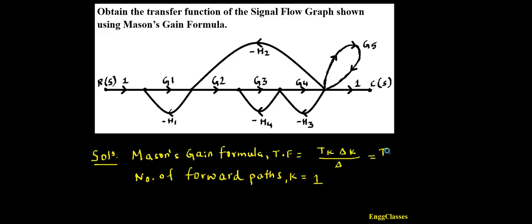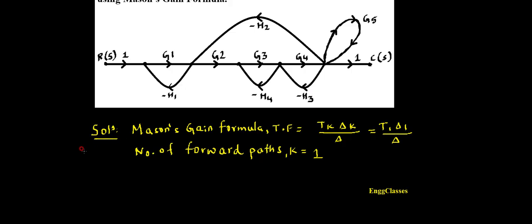Since there is only one forward path, I can expand the formula as T1·Δ1 divided by Δ. Now, what is that forward path? T1 is equal to 1 × G1 × G2 × G3 × G4 × 1, so T1 = G1·G2·G3·G4. This is the only forward path.